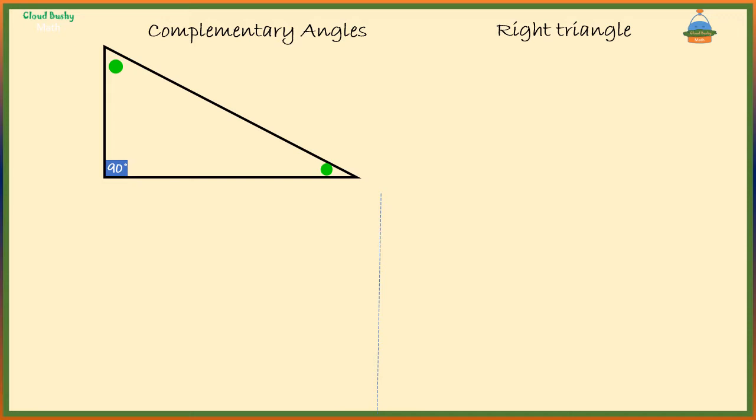Suppose we know this angle to be 50 degrees. It implies that this other angle is 90 minus 50 degrees which is 40 degrees. This method is surely shorter.